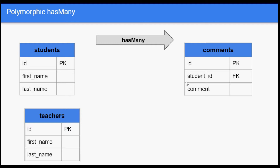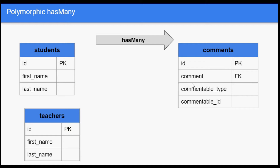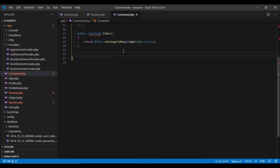We can make the following changes to our comments table. We will introduce two columns: commentable_type and commentable_id. commentable_type will tell whether the comment is related to the teacher or student, whereas commentable_id will tell us the ID of the corresponding student or teacher.